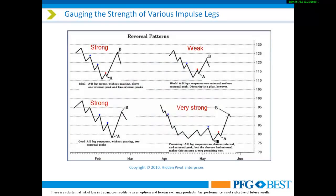This is a schematic that shows impulse legs — not all of them, but a pretty good selection. It shows how some trend changes begin with strong impulse legs and others begin with not so strong impulse legs. As you're going to see, these impulse leg formations are useful not only for forecasting but for trading as well.